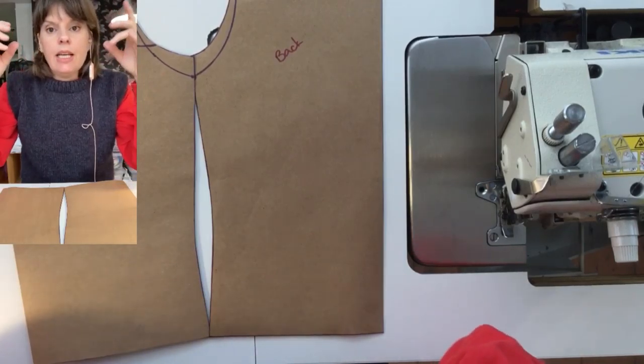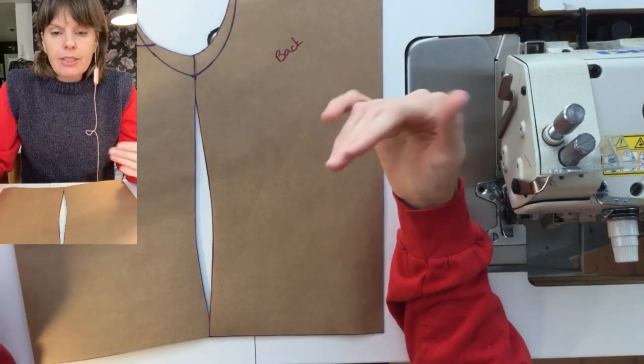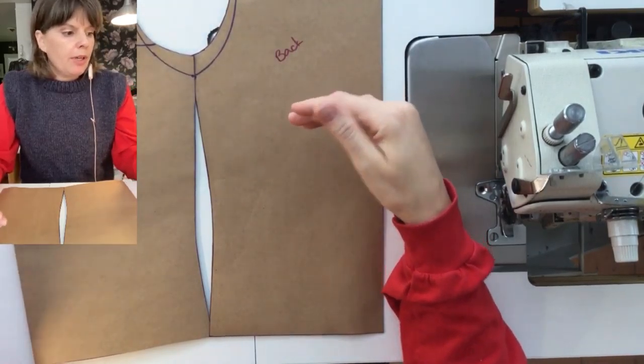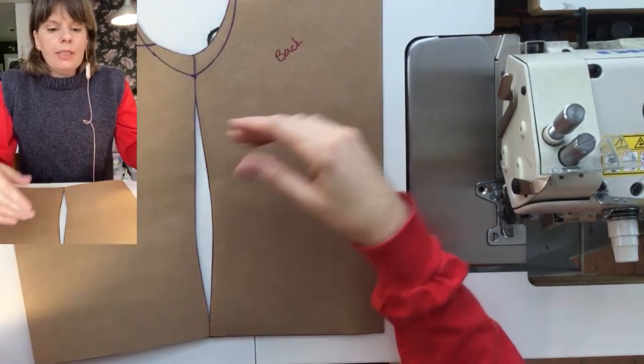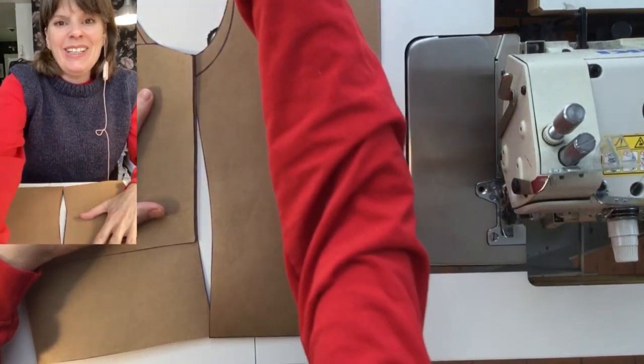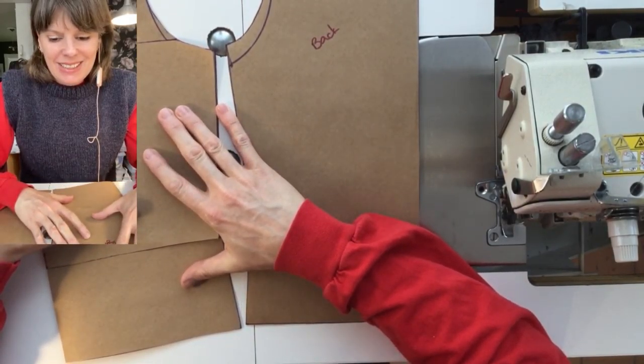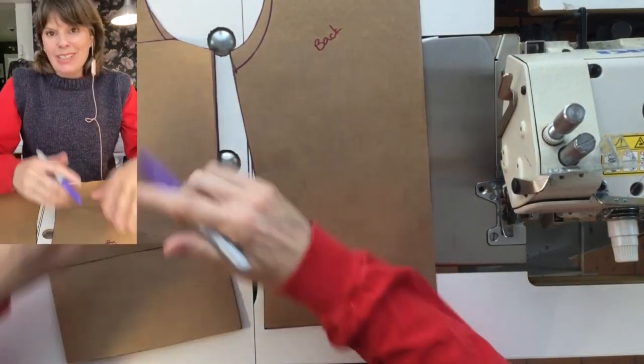So if someone has a binder that they don't want their family to know that it's a binder and they want it to look more like a sports bra, what you might do is trace your stable layer.